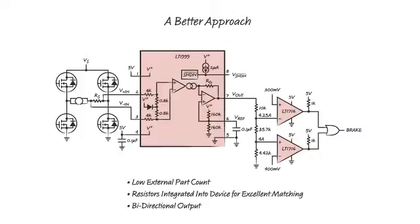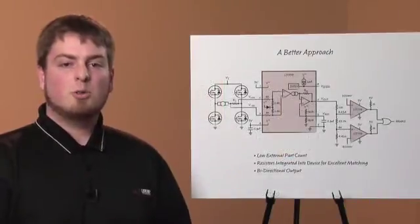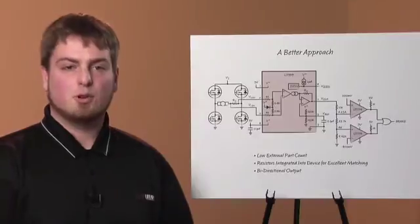Since a gain and sense resistor have been chosen, the design is finished. The part is already set up to bias the output to mid-supply, allowing for bidirectional current measurement. The same comparator circuit will be used to protect the motor from overcurrent faults. With the design finished, let's look at the performance.